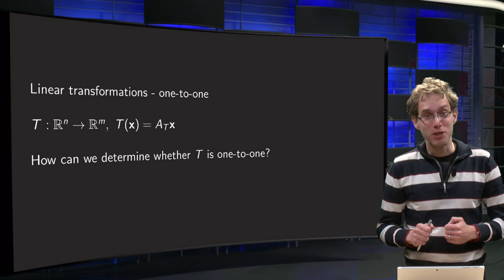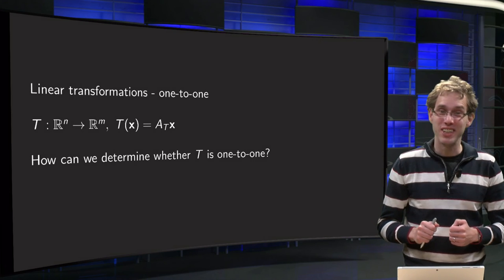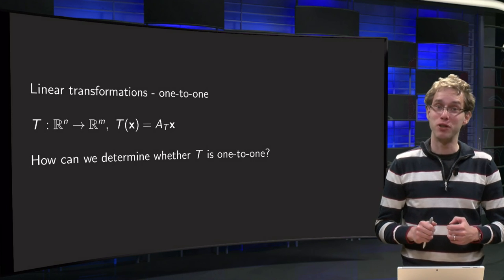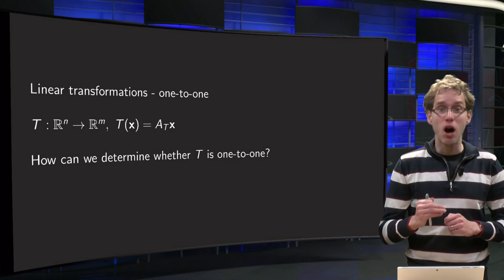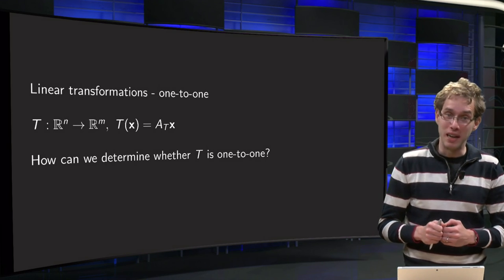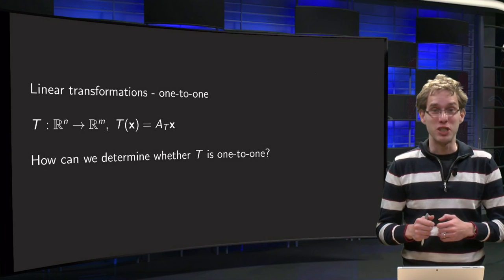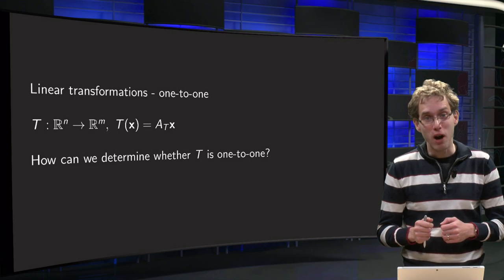You may remember from a calculus course that it is not so easy to establish whether a function is 1 to 1 or not. For functions from R to R you have the horizontal line test, but this requires graphing the function, which can be hard.